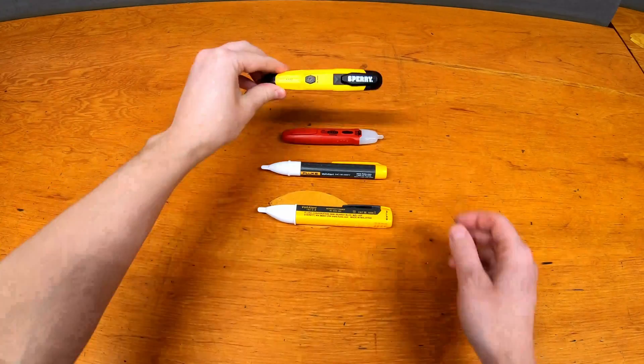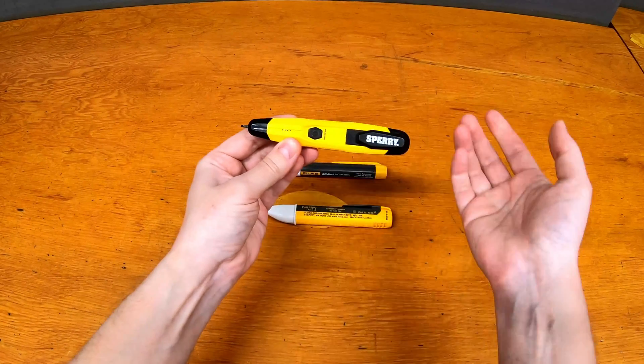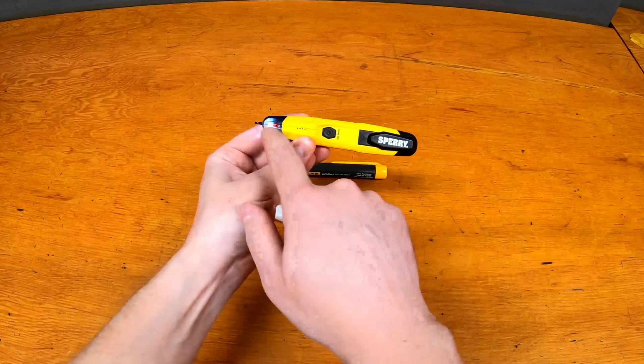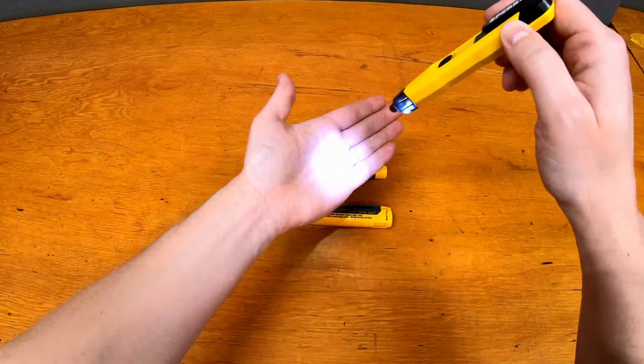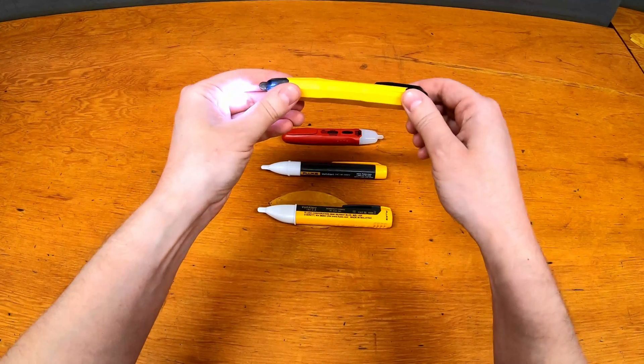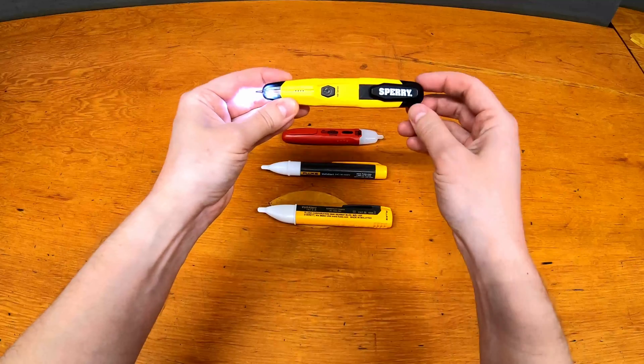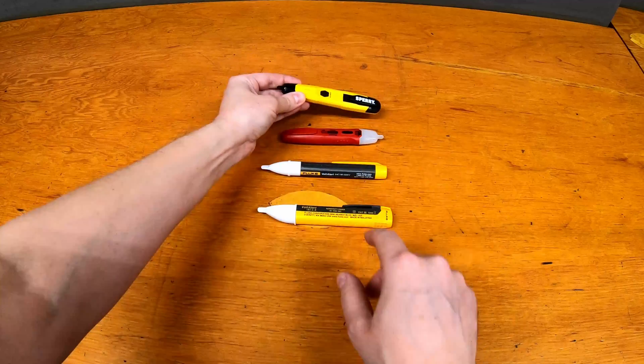And then the last one here is from Sperry. This one again has a button, this one locks on, so once you press the button it turns on, press the button again to turn it off, beeps and lights when you actually turn it on. And this one has kind of a tiny flashlight, so if you're poking inside of an electrical box you can hopefully see what's going on. It's kind of a nice feature in that sense. So otherwise fairly simple, visual and auditory signal on this one with a lock-on button.